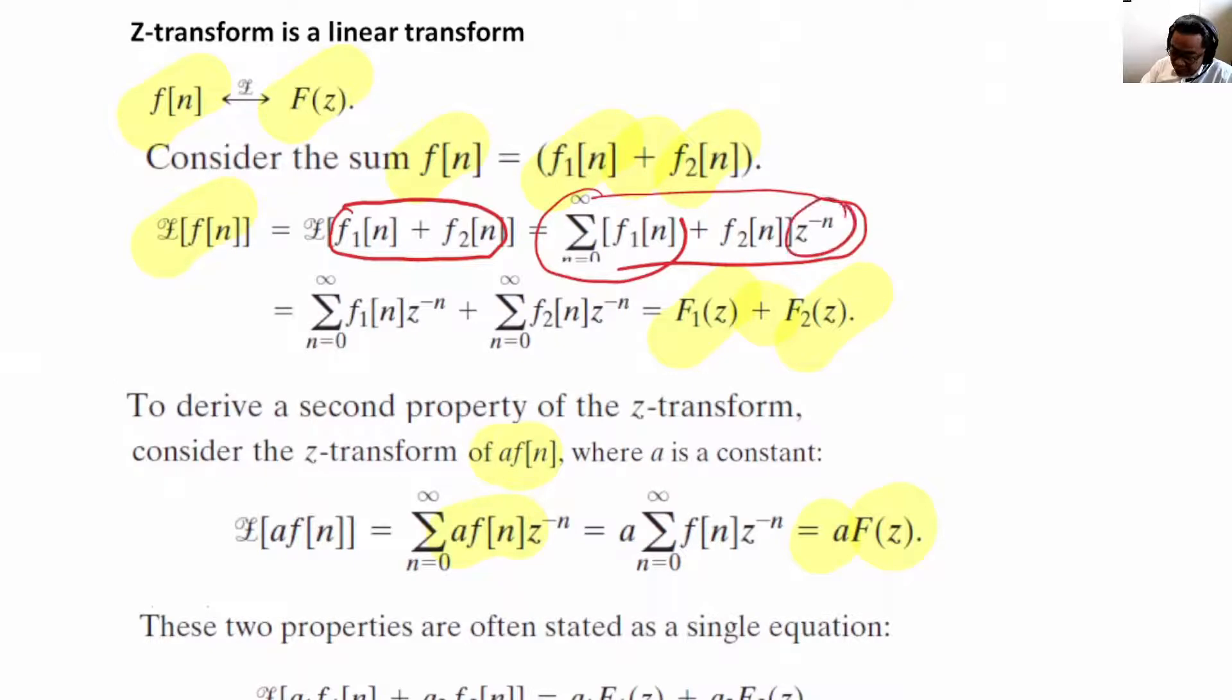We now distribute Z minus N into each one of these, because we can distribute in this sum. We then recognize that this is F1 of Z, and this is simply F2 of Z. So, we first prove the first property.